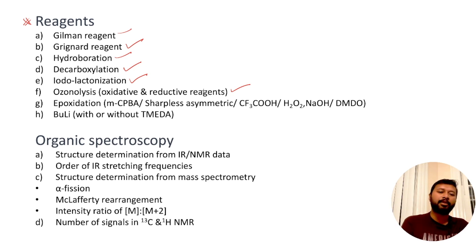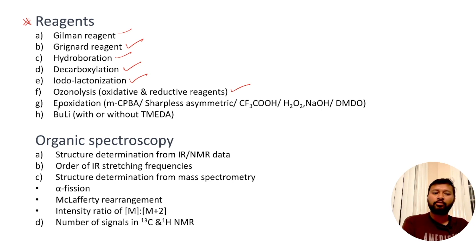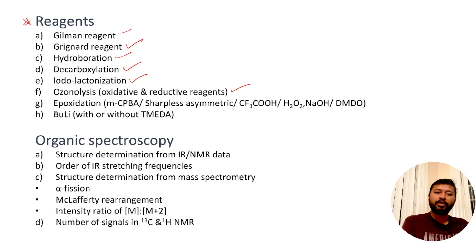Epoxidation is also important — you should study reagents like mCPBA and Sharpless asymmetric epoxidation. Know how the oxidation and product differ when the reagent is changed. Also, in the presence of butyllithium with or without TMEDA, you should know how product formation differs.